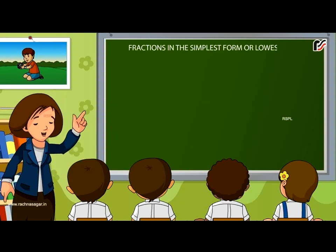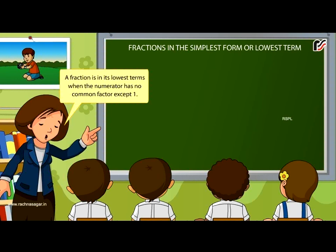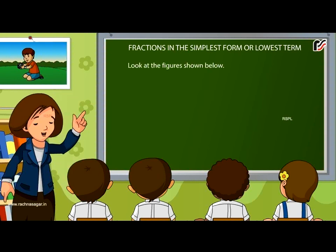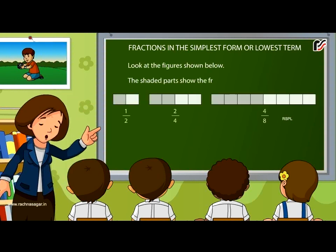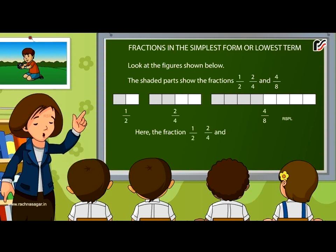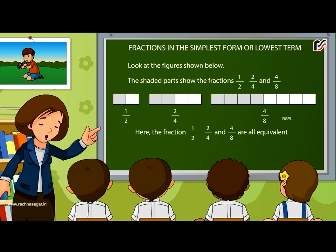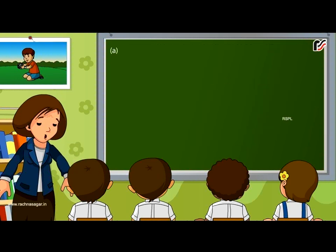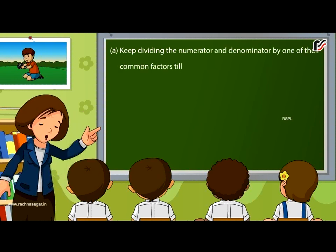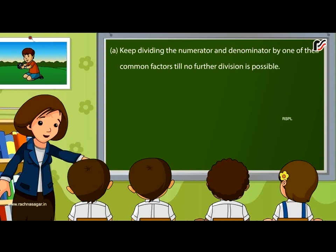Fractions in the simplest form or lowest term: a fraction is in its lowest terms when the numerator has no common factor except 1. The shaded parts show the fractions 1 by 2, 2 by 4, and 4 by 8. These are all equivalent fractions, but 1 by 2 is in its lowest terms. Keep dividing the numerator and denominator by one of their common factors until no further division is possible.